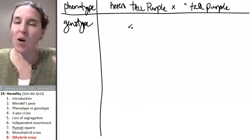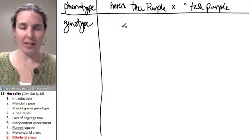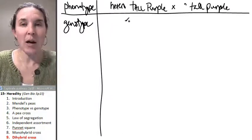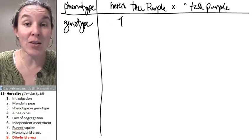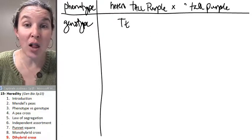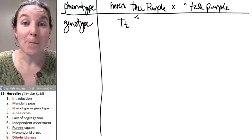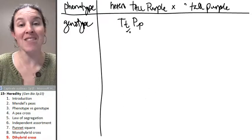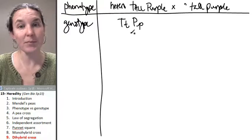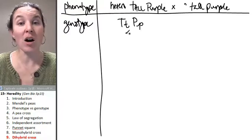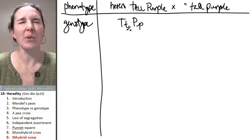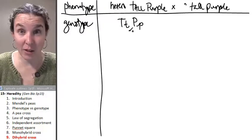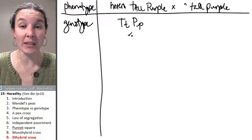So here's how I like to keep my traits together. Again, your bookkeeping doesn't matter, but I'm going to say my heterozygous tall purple parent is going to have this genotype. Both traits are, what's the word, heterozygous. So I've got a capital and a lowercase, a dominant and a recessive allele.